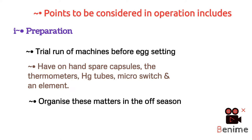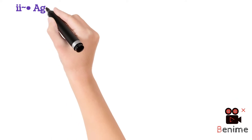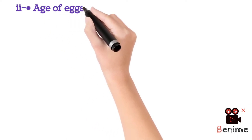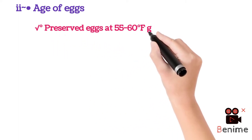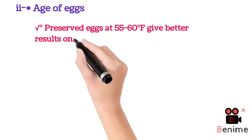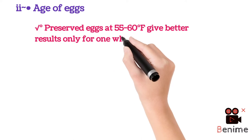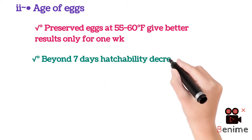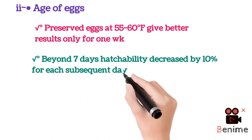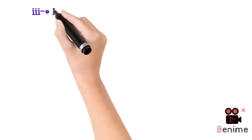These spare parts should be organized in the off-season, before the start of the incubation process. The second factor is the age of the eggs, which is a major cause of poor hatches and dead-in-shell. Eggs preserved at 55 to 60 degrees Fahrenheit give better results only for one week. Eggs should not be more than seven days old; beyond seven days, hatchability decreases by 10% for each subsequent day.